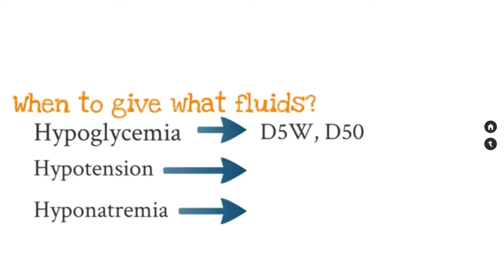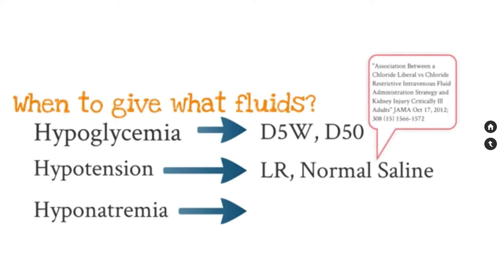For hypotension, you generally want to use an isotonic solution — so lactated Ringer's or normal saline. A study published in JAMA examined the association between a chloride-liberal strategy using normal saline versus a chloride-restrictive strategy using lactated Ringer's, and kidney injury in critically ill adults. Though the study concluded lactated Ringer's was associated with less kidney injury, the data was limited and the study was quite faulty. Importantly, it highlights that more research is needed into IV fluids and their actual effects on the body.